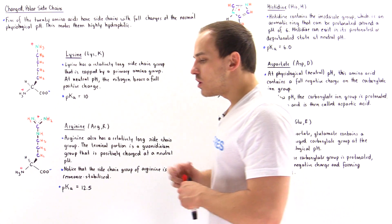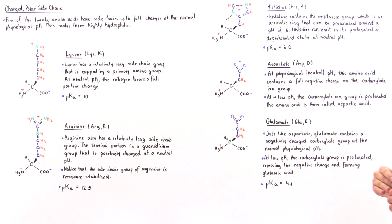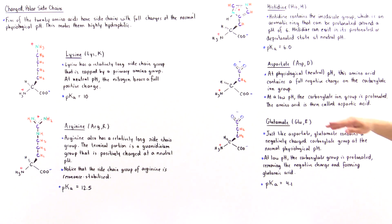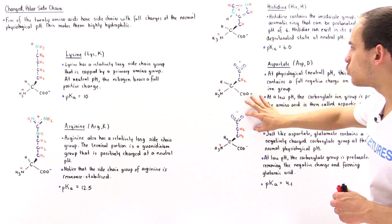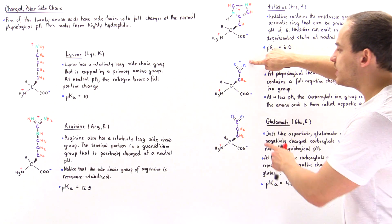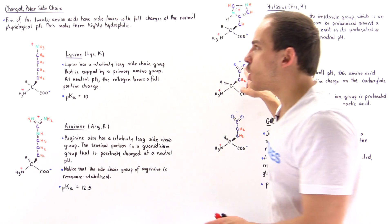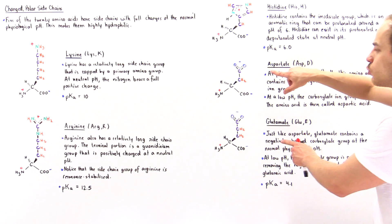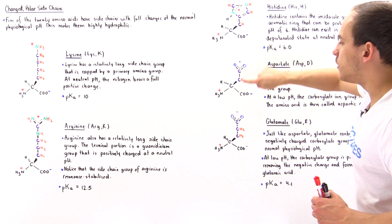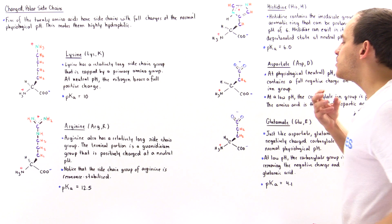Acidic amino acids have side chain groups with a full negative charge at the normal physiological pH, because the pKa value of their side chains is relatively low — below 7. The pKa value of the side chain groups in both aspartate and glutamate is 4.1. Above 4.1, these groups are very likely to be deprotonated, so at a physiological pH of around 7, they exist in their deprotonated state as carboxylate ion groups, bearing a full negative charge delocalized among the two electronegative oxygen atoms.